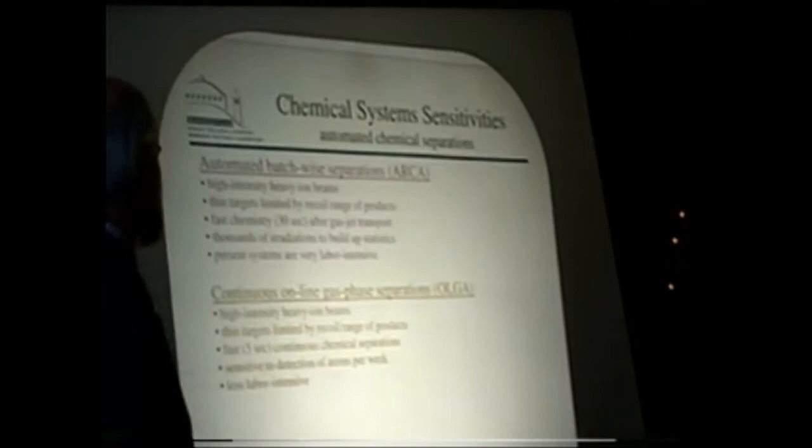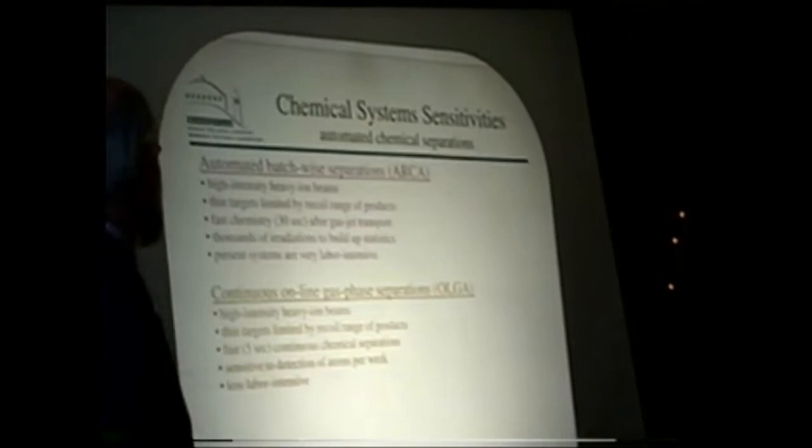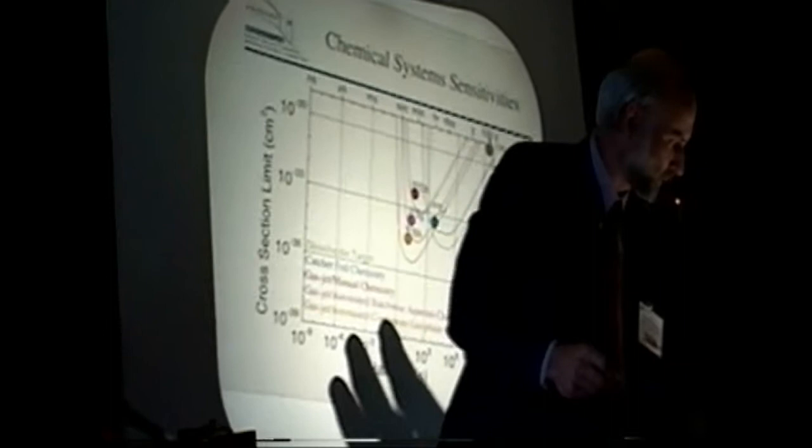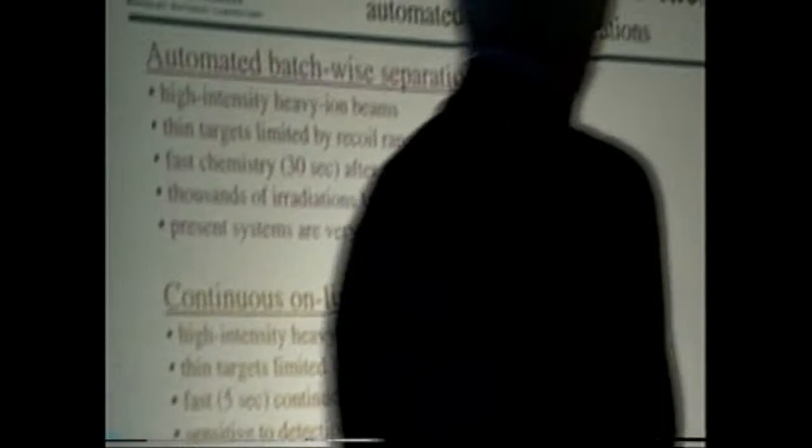And then we moved over to some automated systems. In the pink curve, we heard about already from Matthias. A gas jet transport to an automated aqueous chemistry, and there I'm talking pretty much about the ARCA. The first three points are about the same. The chemistry is somewhat faster. We're getting samples onto the detectors after about 30 seconds. It can be repeated about every 45 seconds.